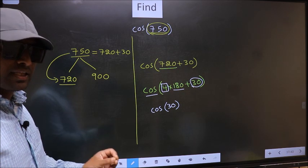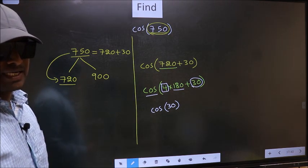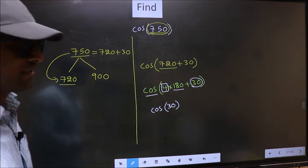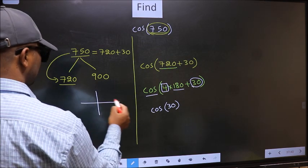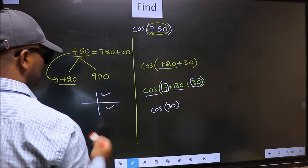And all the even multiples of 180, they lie in either the first or the fourth quadrant.